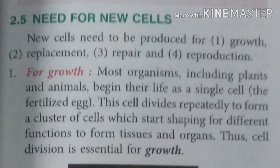For growth, most organisms including plants and animals begin their life in a single cell, that is the fertilized egg. The cell divides repeatedly to form a cluster of cells, which start shaping different functions to form tissue and organ. Thus, cell division is essential for growth.